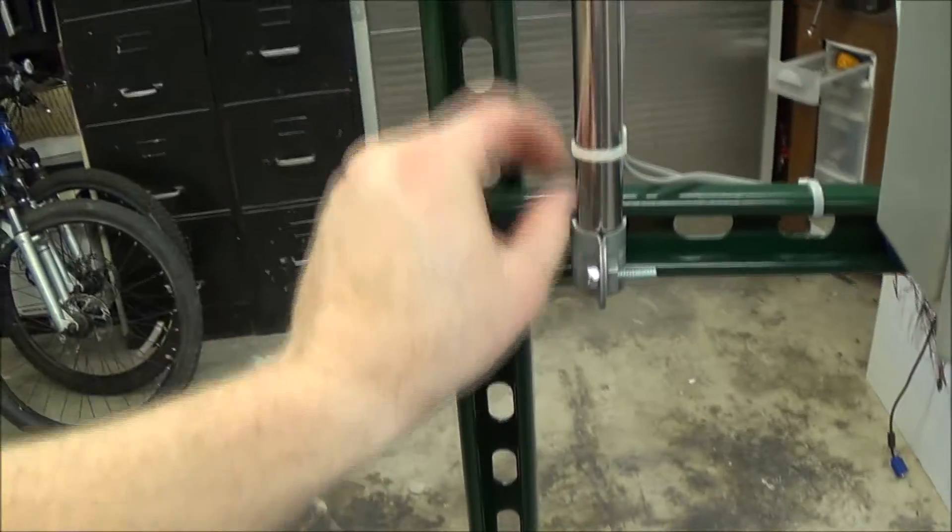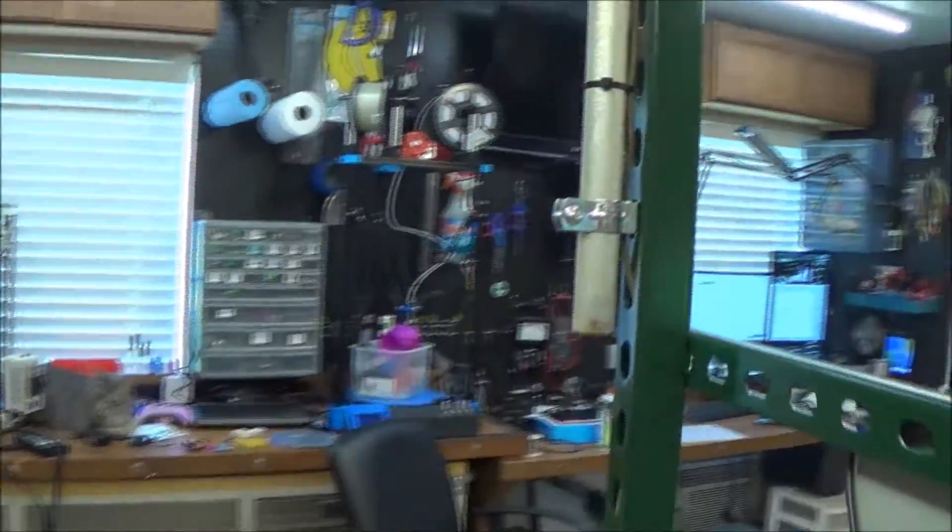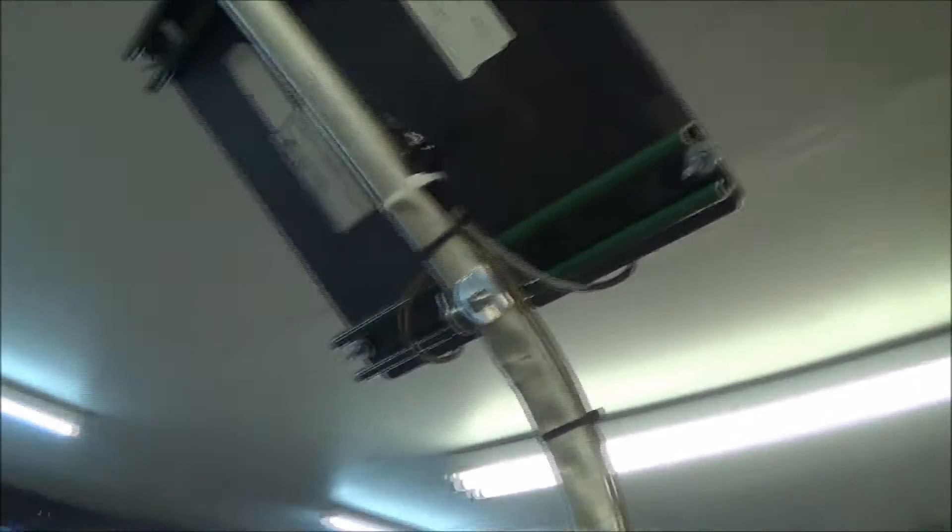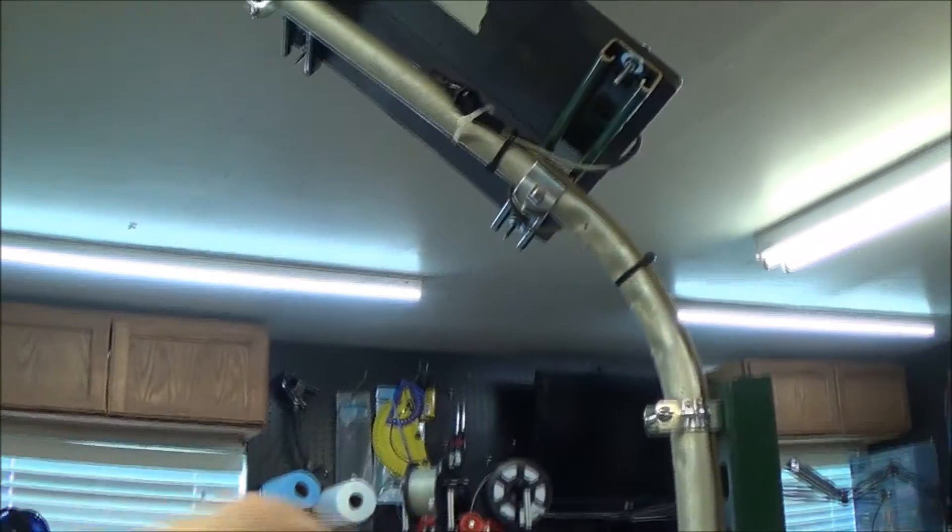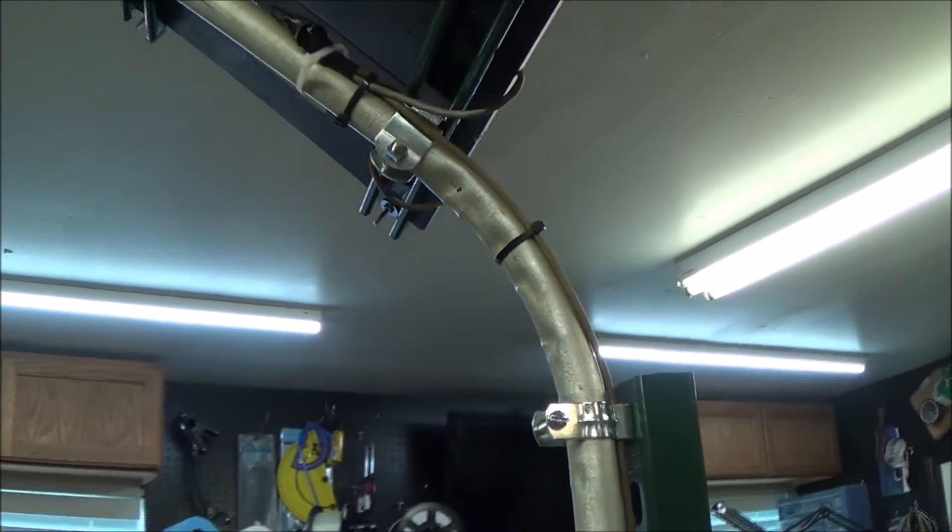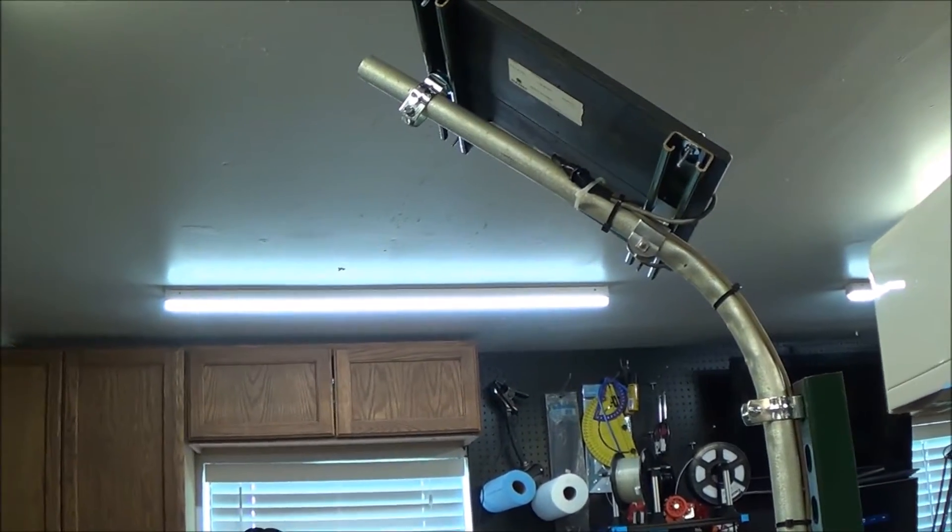And then for mounting pipes, these are called strut straps. They've got different types. You can see that I didn't have the proper pipe bender, so I bent this around the hitch of my truck. Not the right way to do it, but it got me up and going.